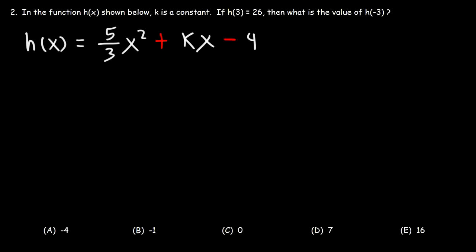Number 2. In the function h of x shown below, k is a constant. If h of 3 is 26, then what is the value of h of negative 3? We're given this information, which is going to be helpful in order for us to calculate the value of k. Once we find the value of k, we can replace x with negative 3 and find the value of h of negative 3.